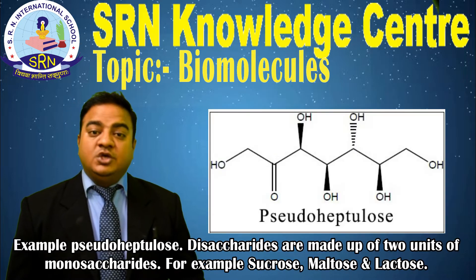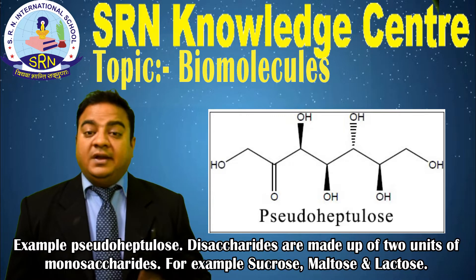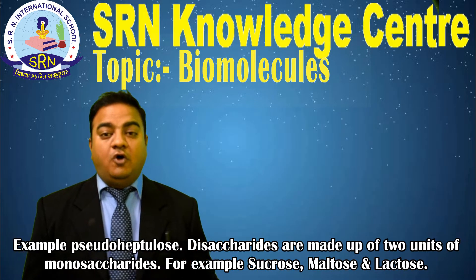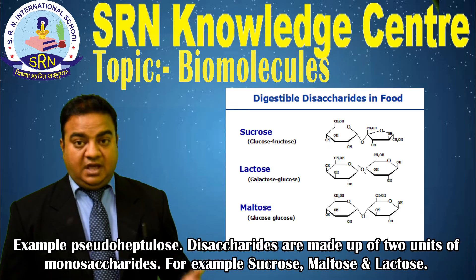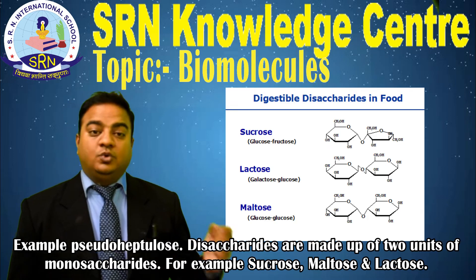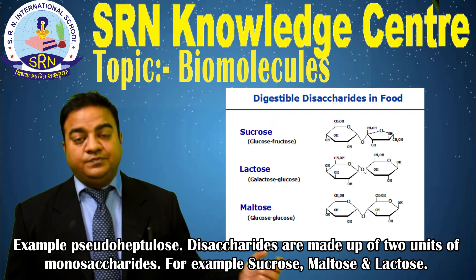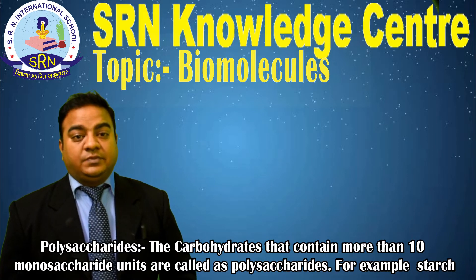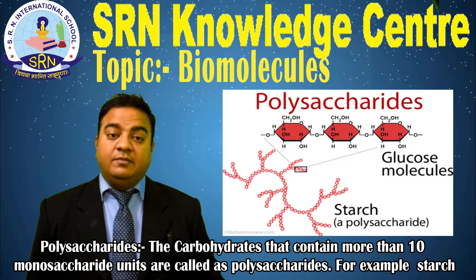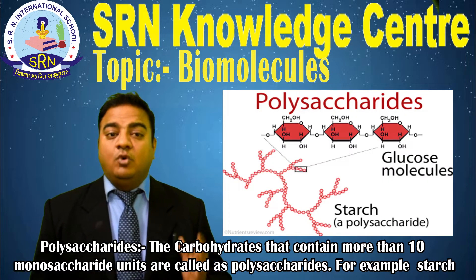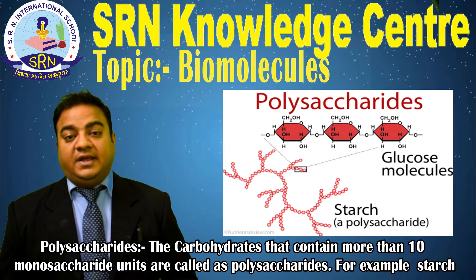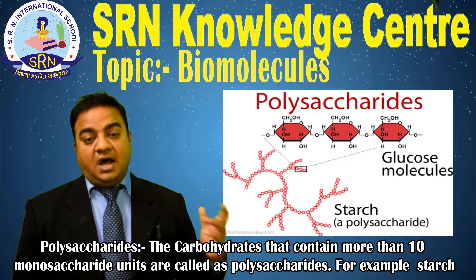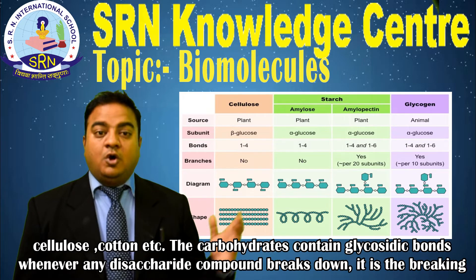An example of an oligosaccharide is pseudoheptaose. Disaccharides are made up of 2 units of monosaccharides — for example, sucrose, maltose, and lactose. Polysaccharides: the carbohydrates that contain more than 10 monosaccharide units are called polysaccharides — for example, starch, cellulose, and cotton.